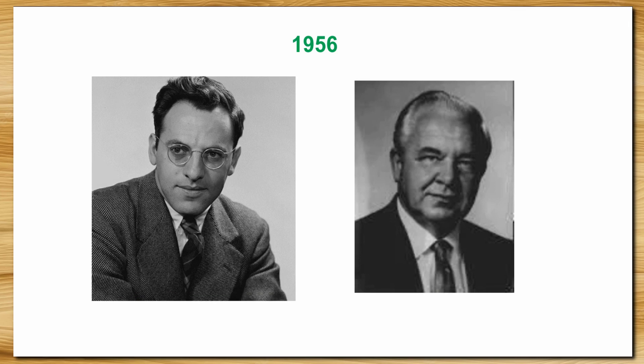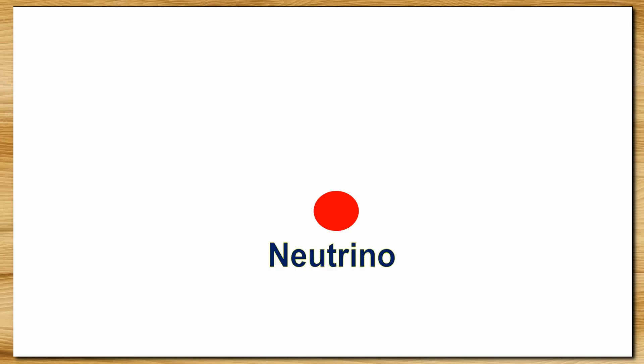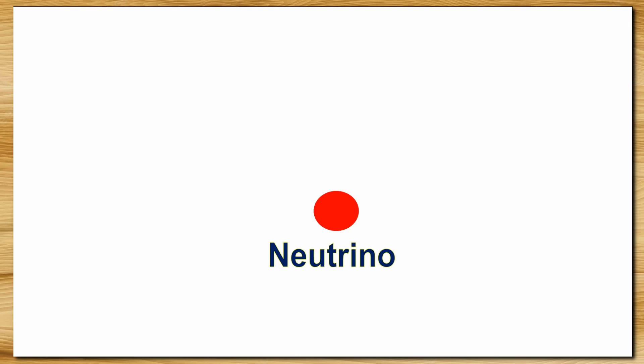Finally, in 1956, Frederick Reines and Clyde Cowan detected a neutral spin-half and very tiny particle. And yeah, it was neutrino, a newly discovered fundamental particle of Lepton family.